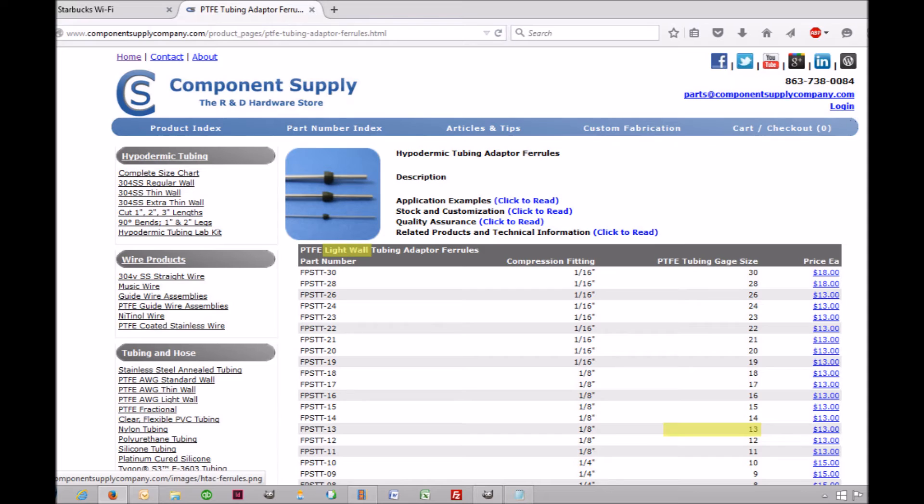The ferrule size for this PTFE tubing is one-eighth of an inch, so we need to use a one-eighth inch compression fitting. The part number we would use for this example is FPSTT-13.